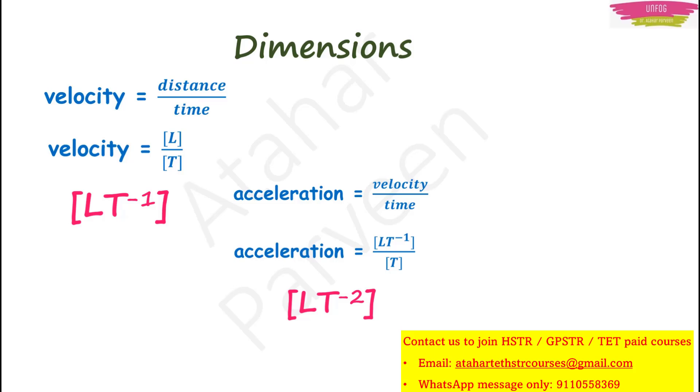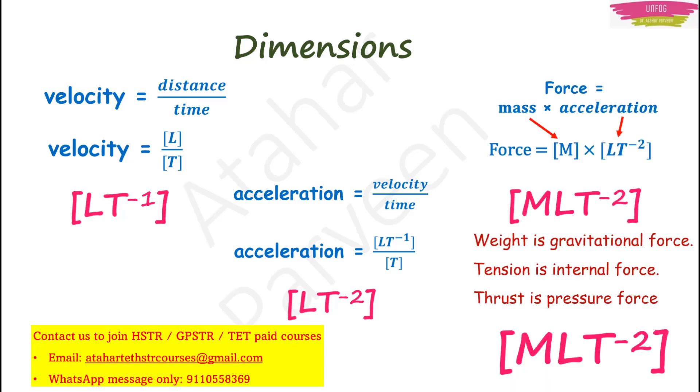If you put time in numerator, it becomes minus 1. Similarly, for acceleration, it is velocity upon time. Now, just now we saw that the dimensional formula for velocity is L T minus 1. So, dimensional formula for acceleration will become L T raised to minus 2. In the same manner for force, you can do it for force which is equal to mass into acceleration. Just write their dimensional formula and multiply. So, M L T raised to minus 2 becomes the dimensional formula for force and so will be for weight, tension and thrust because they are all type of forces.